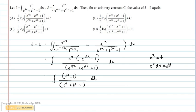Now, this can be written as integral 1 minus 1 by t square, divided by t plus 1 by t whole square minus 1, dt.